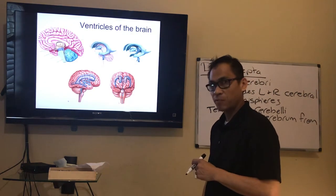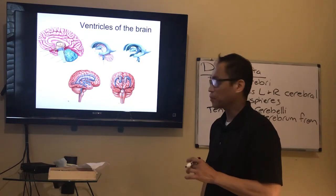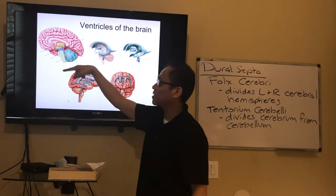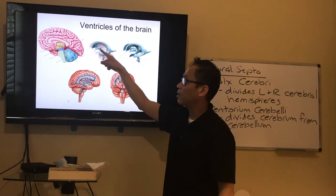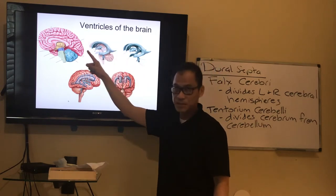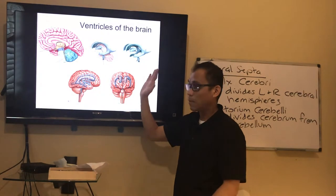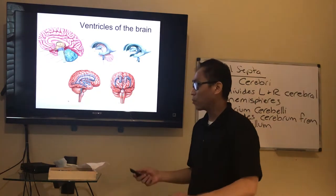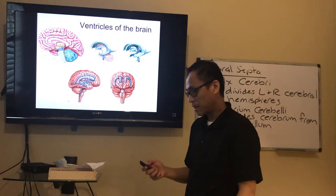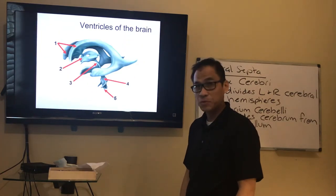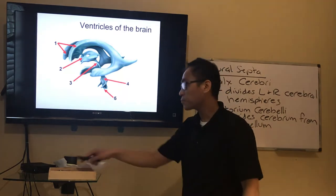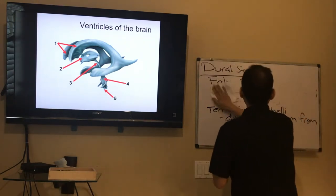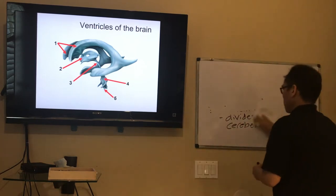The ventricles of the brain cushion the brain from the inside — they're filled with CSF. If you remove the brainstem and diencephalon, you can see how the ventricles associate with the brainstem. Here are the ventricles all by themselves, and here they are transparent within the whole brain and brainstem apparatus. There are four ventricles, and you need to know what they are. They're filled with CSF and help circulate it — just like ventricles of the heart are filled with blood, these ventricles of the brain are filled with CSF.